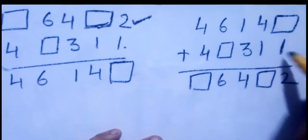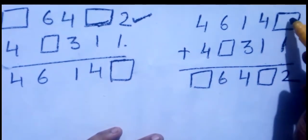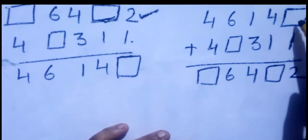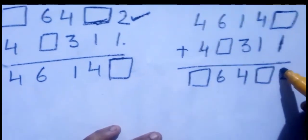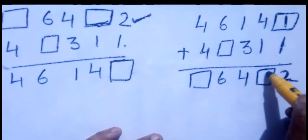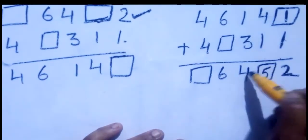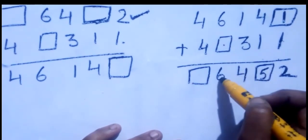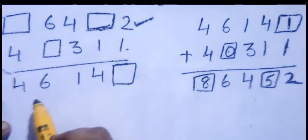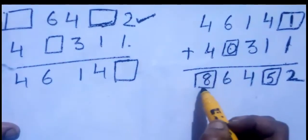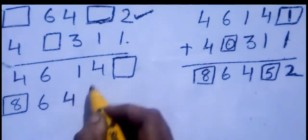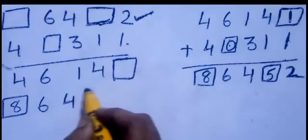So you have to find out each digit. 1 plus 1 is 2, so that box is 1. Then 4 plus 1 is 5. 3 plus 1 is 4. 6 plus which number gives 6? That is 0. 4 plus 4 is 8. So the answers to fill in are: 8 in the first box, 6 4, then 5 and 2.